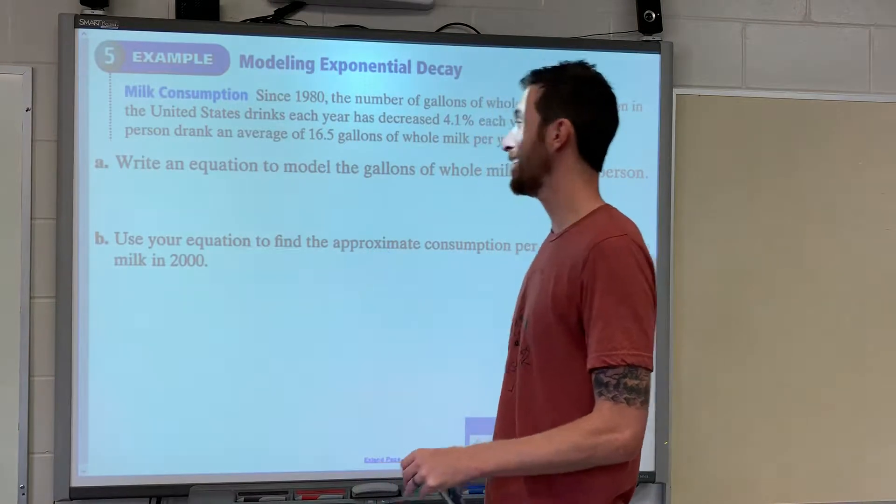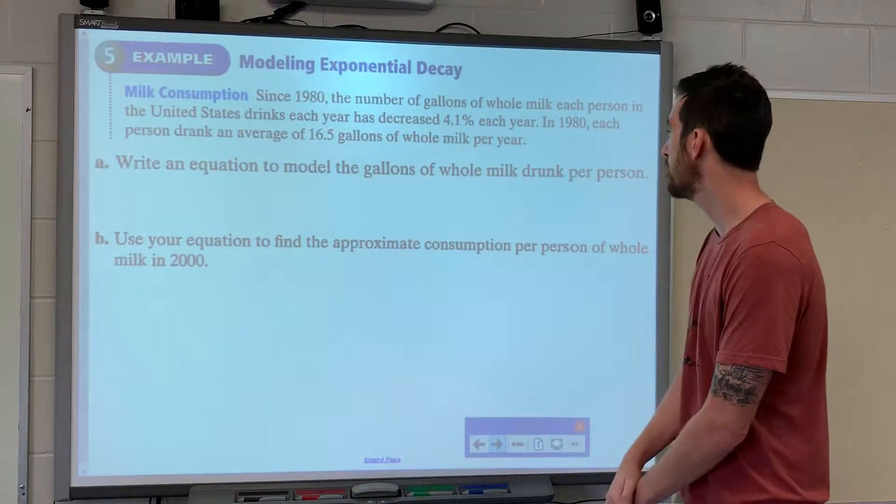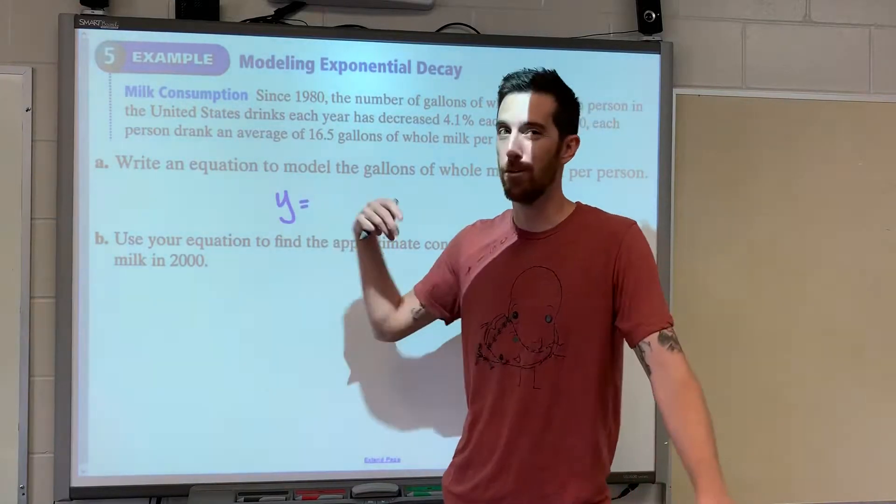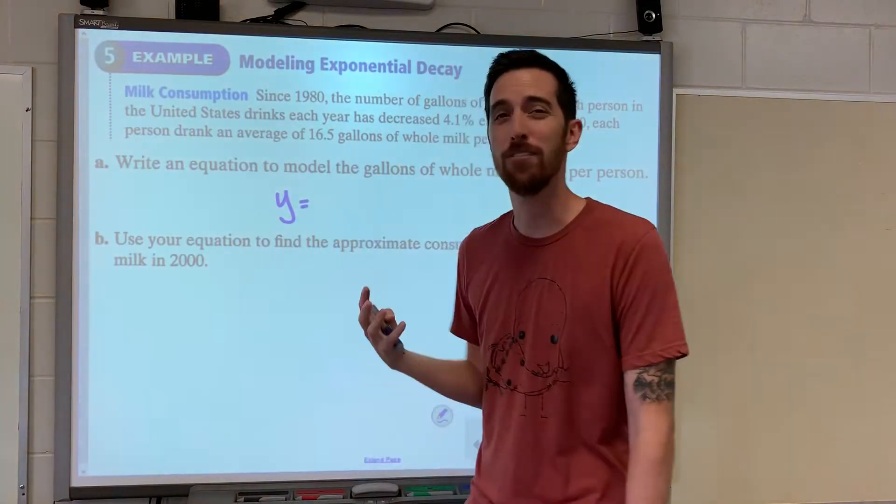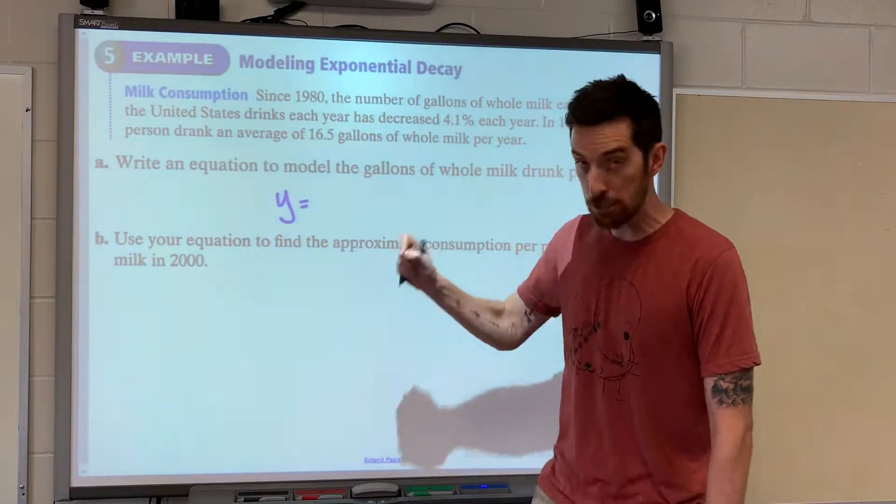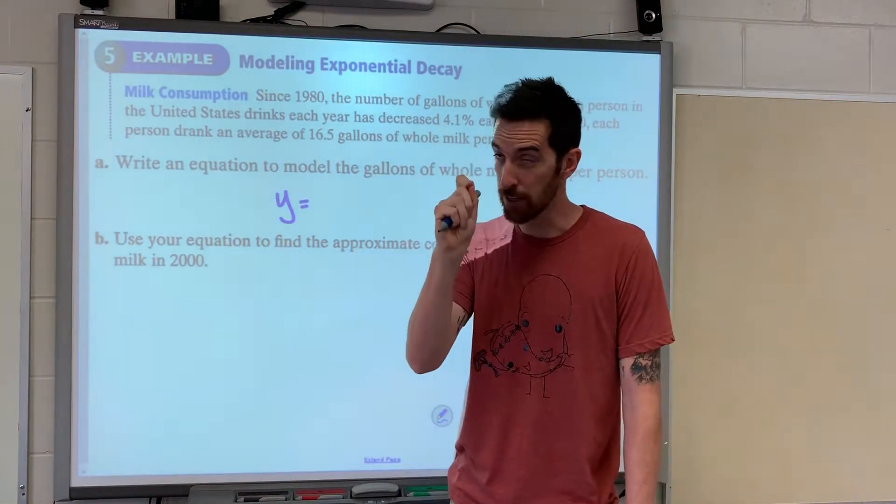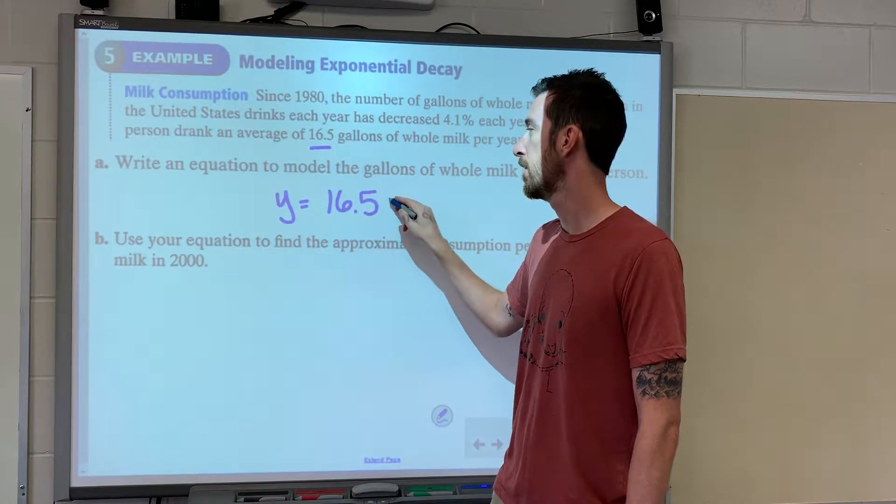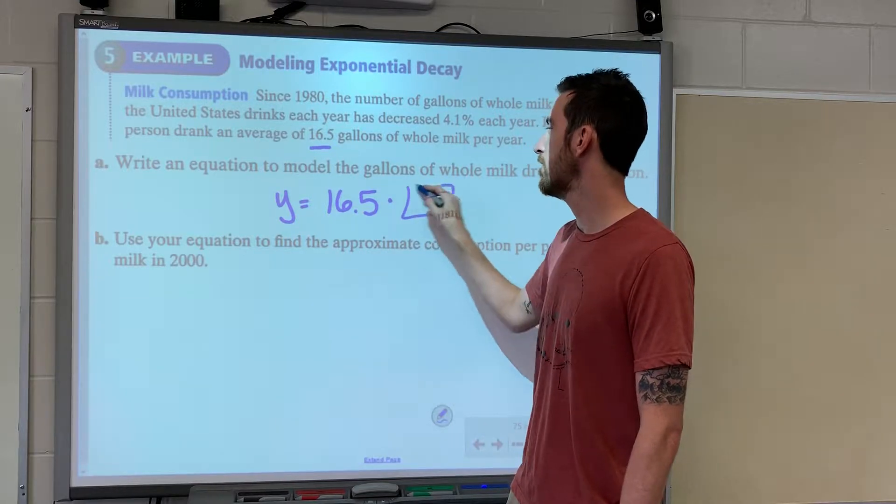Write an equation to model the gallons of whole milk drunk per person. You could write y, you could write f of x, whatever you want on the left side. We're just going to write y. Now the initial amount doesn't have an exponent. The initial amount is 16.5 gallons.